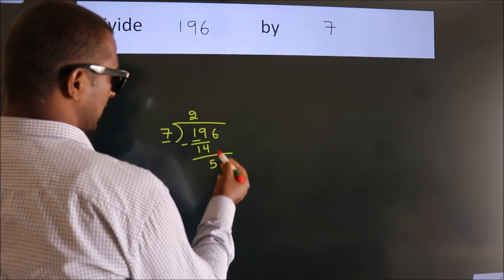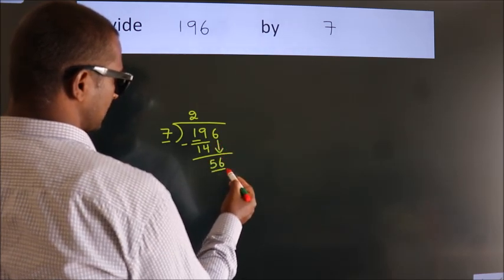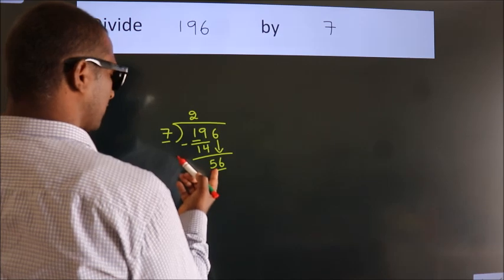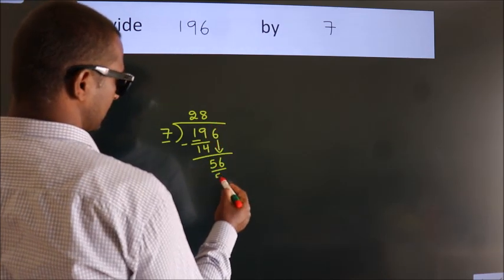After this, bring down the beside number. So 6 down, making 56. When do we get 56? In the 7 table: 7 times 8 is 56.